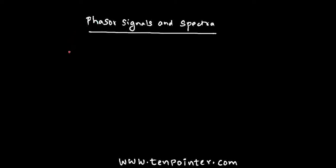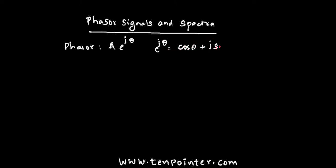All physical systems will interact with real signals, and we can represent a real signal in terms of complex quantities. A phasor is represented as A·e^(jθ), where A is the amplitude, θ is the angle. Using Euler's theorem, you can write e^(jθ) as cos θ plus j·sin θ.